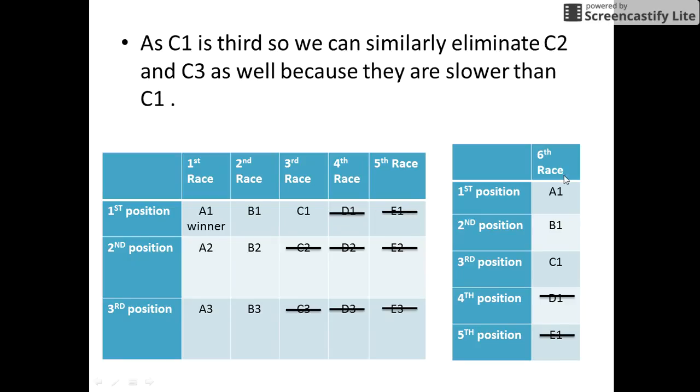Now, according to the sixth race, C1 was in the third position, so we can eliminate C2 and C3 since they again cannot hold the top three positions as A1, B1 and C1 are faster than C2 and C3.